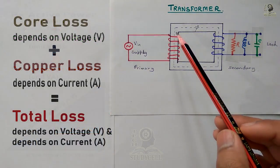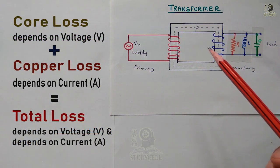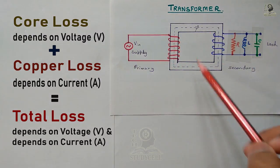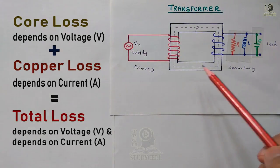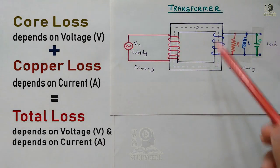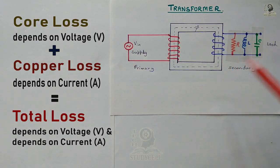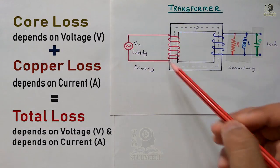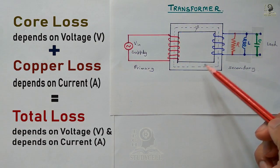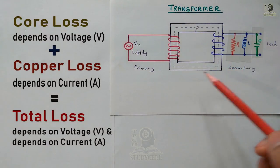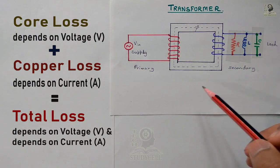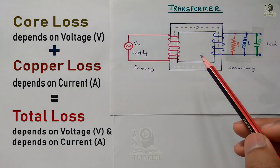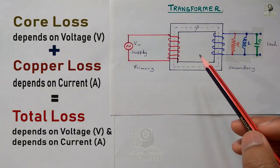The losses that occur in the transformer are core loss and copper loss. Core loss depends on the voltage, as the magnetic property of the transformer is constant. Copper loss depends on the current flowing through the winding, as the resistance of the winding is constant. From a loss perspective, we can also see that the losses depend on voltage and current. So we rate the transformer in VA — voltage ampere — and if the rating is higher, we use kilovolt ampere (kVA) or megavolt ampere (MVA).